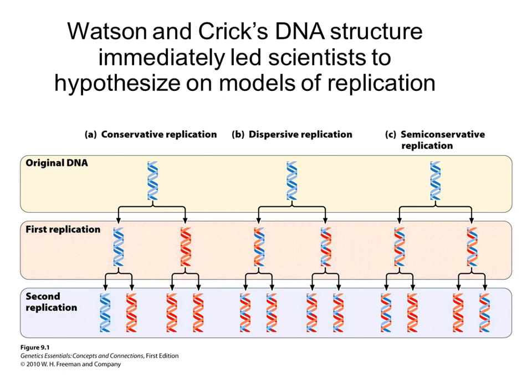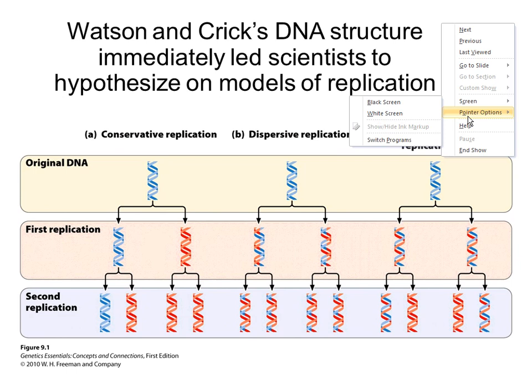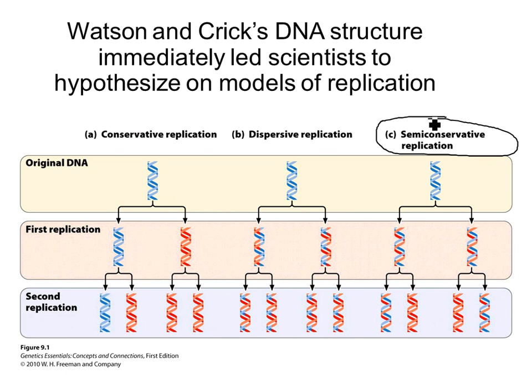When Watson and Crick described the structure of DNA, they immediately saw that there was already an obvious idea for how replication could happen. Because on a double-stranded DNA molecule, if you pulled the two strands apart, you really had enough information looking at one strand to know what nucleotides you would need to join together to make the complementary strand. So prior to 1958, there was already an idea of the way replication could happen.